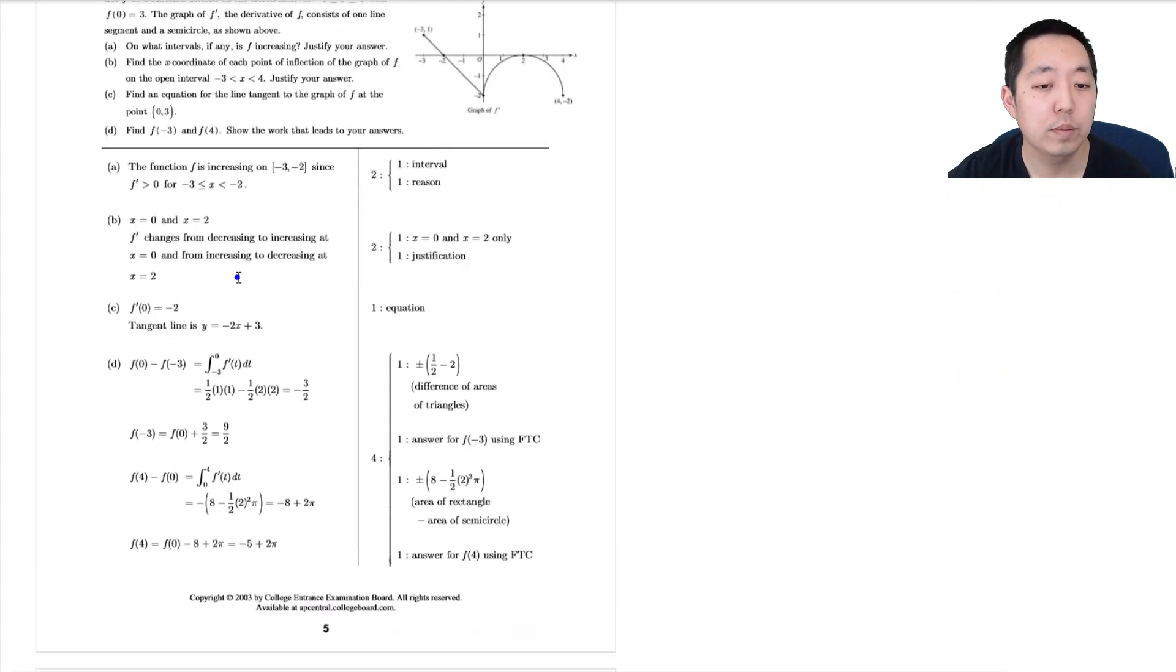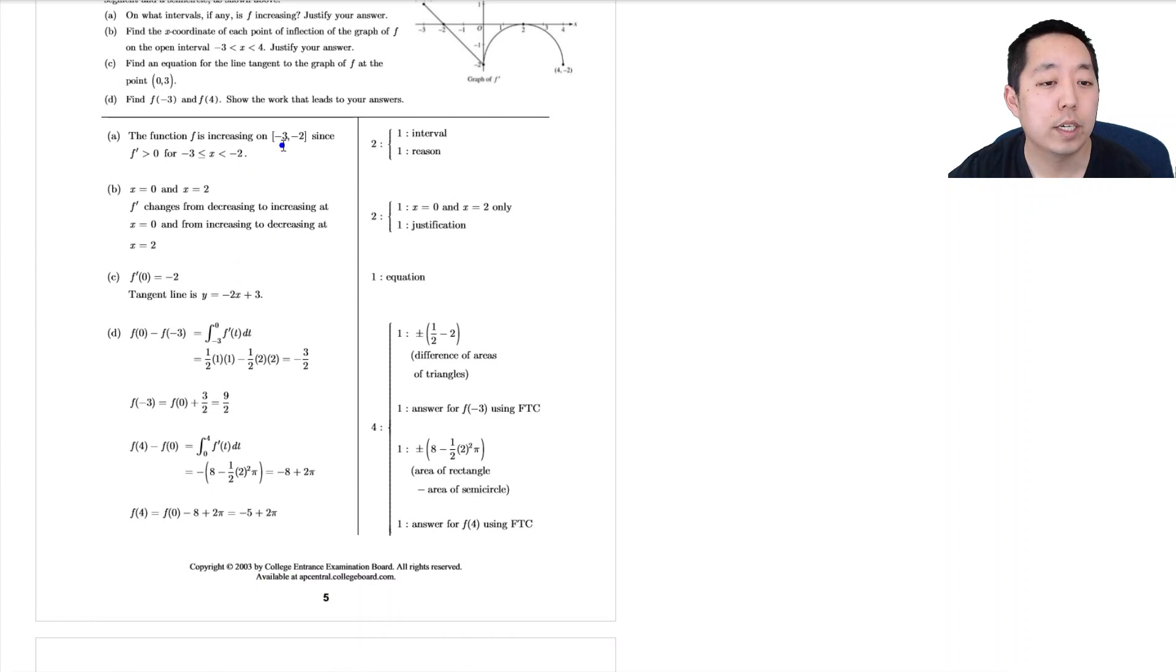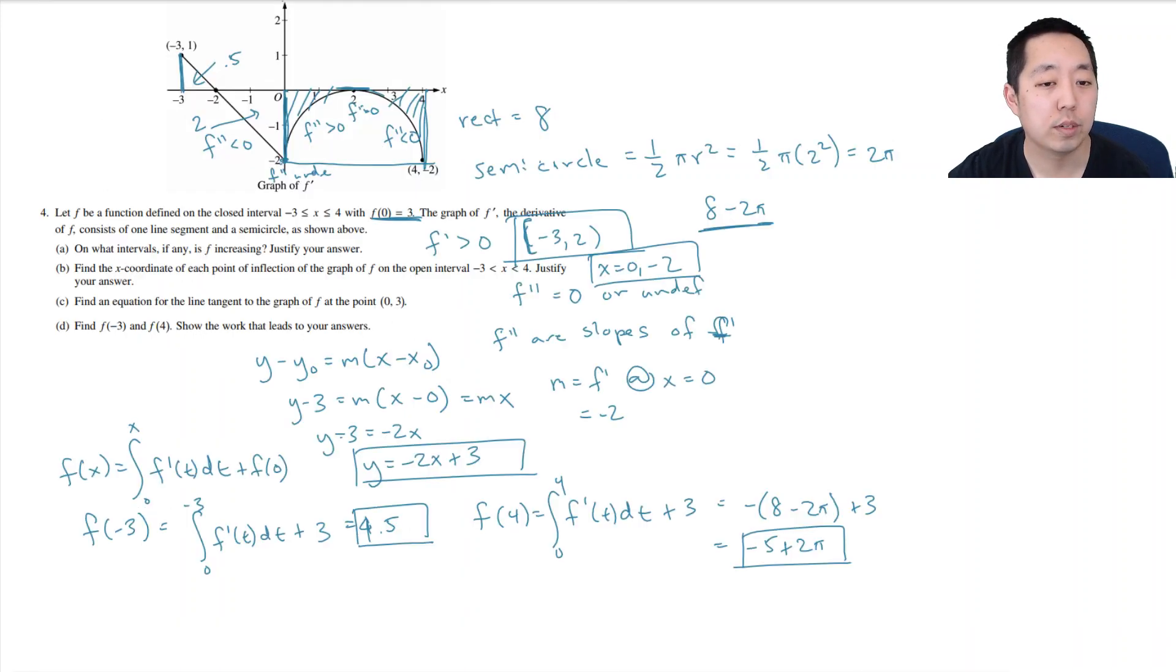So let's take a look at the solutions here. Is increasing from negative 3 to negative 2 since f prime. Technically this should be an open interval. I don't think they'll dock you for it. It's technically an open interval though. Because it's not equal to negative 2, because right at that point it's actually 0. But we said we got the right thing. Negative 3 to negative 2. That's what we said, right? I don't know why I didn't say negative. It was negative 2.